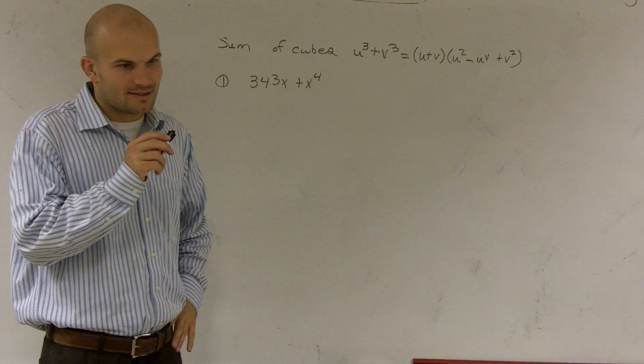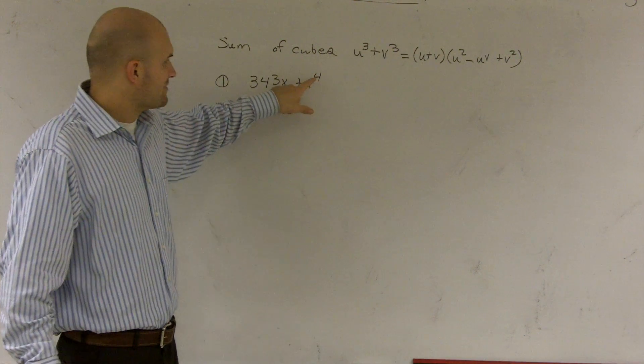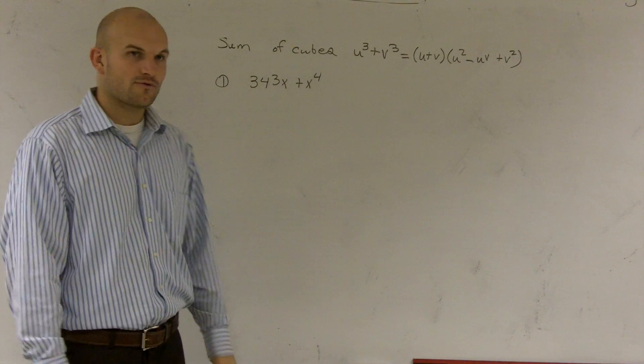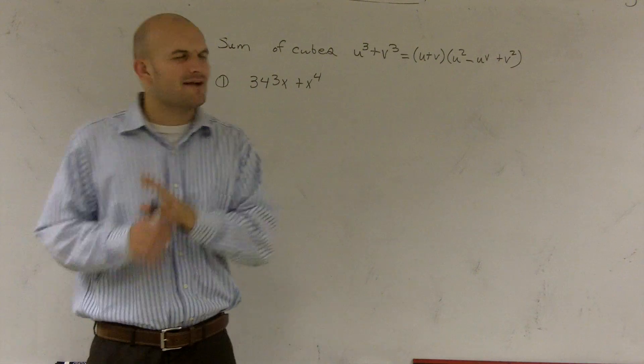And when doing that, I need to say, well, I don't have anything cubed, do I? First of all, I have an x to the fourth and I have 343. Well, I do notice I always want to look, whatever you're factoring, always see what you can factor out.